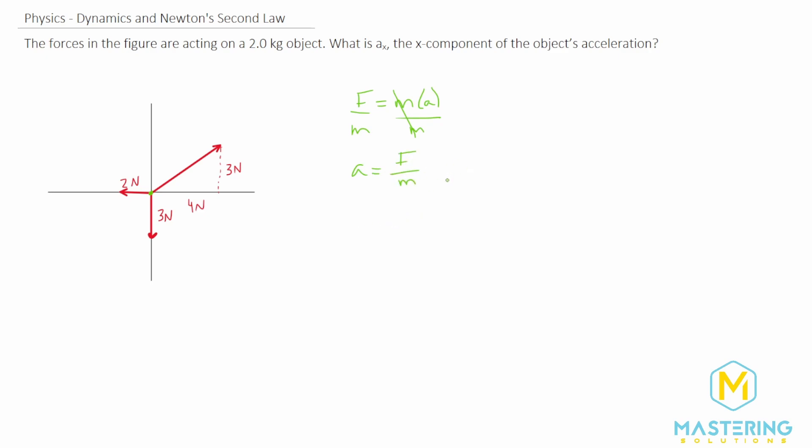Now before we plug in the values, let's sum the forces in the x direction. The sum of the forces in the x direction is four newtons minus two newtons, which equals two newtons.